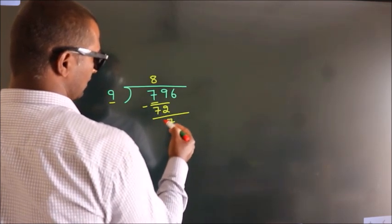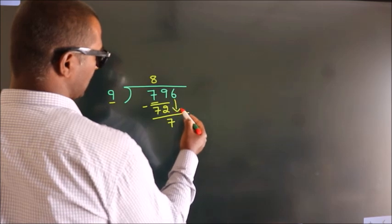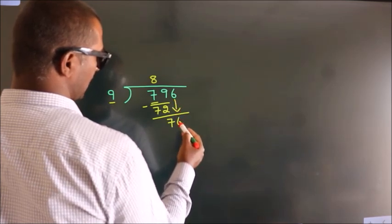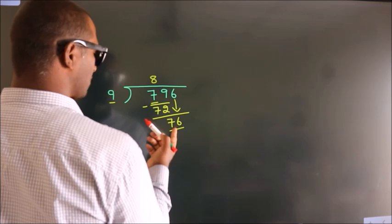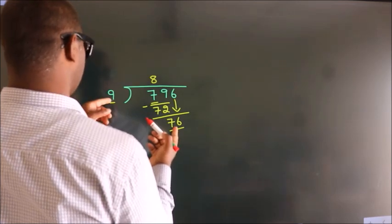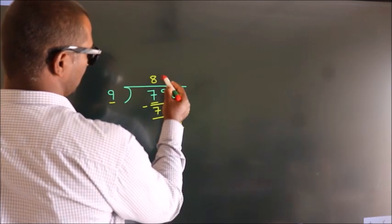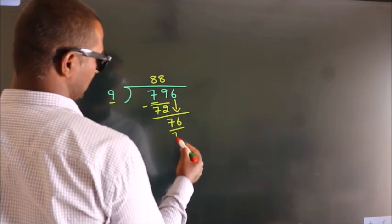After this, bring down the beside number. So 6 down, making 76. A number close to 76 in the 9 table is 9 times 8, which is 72.